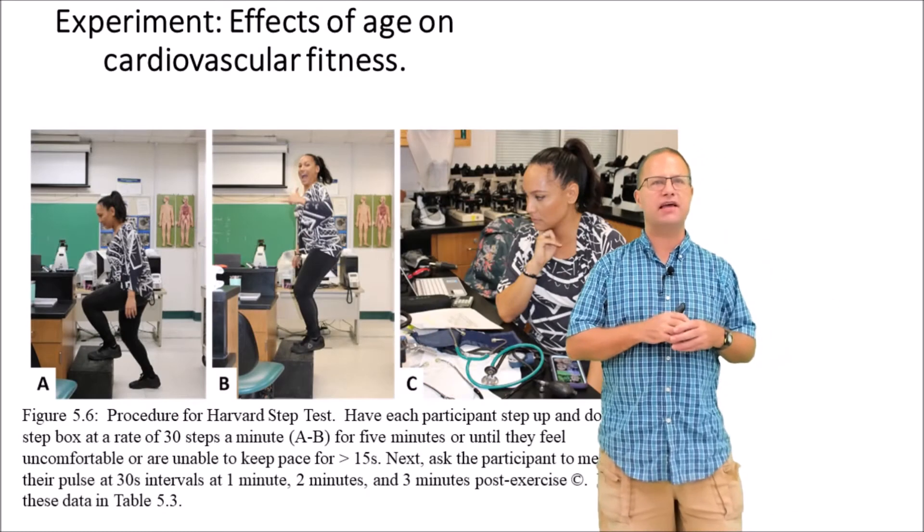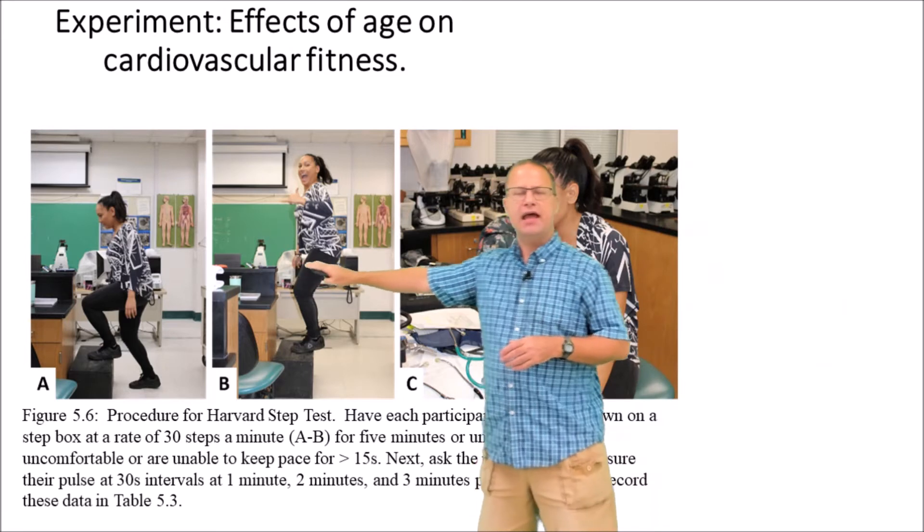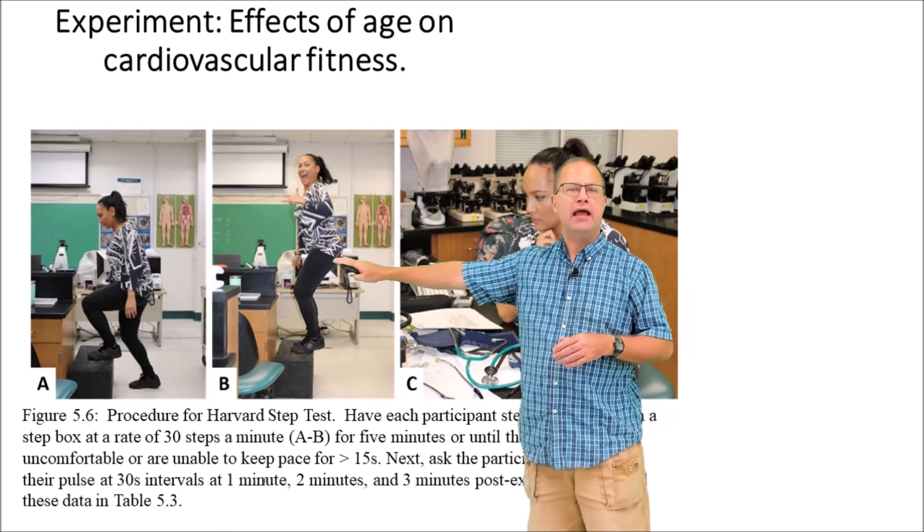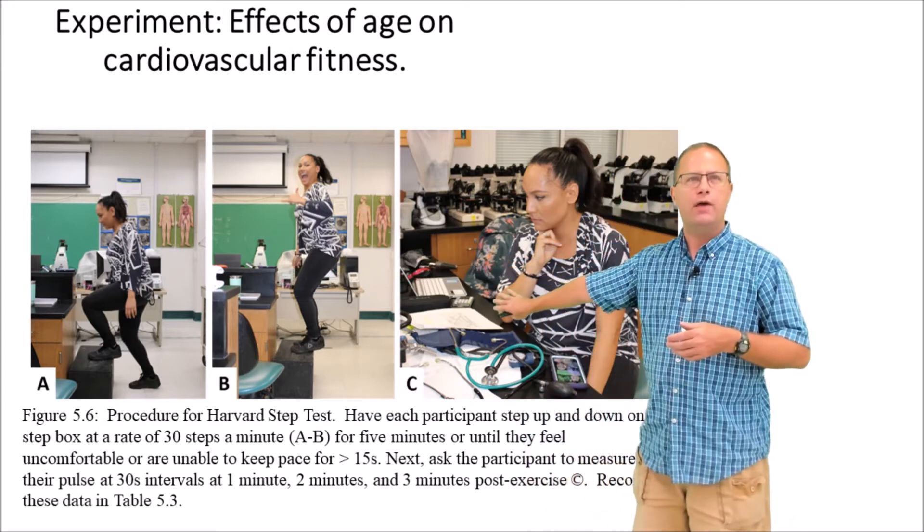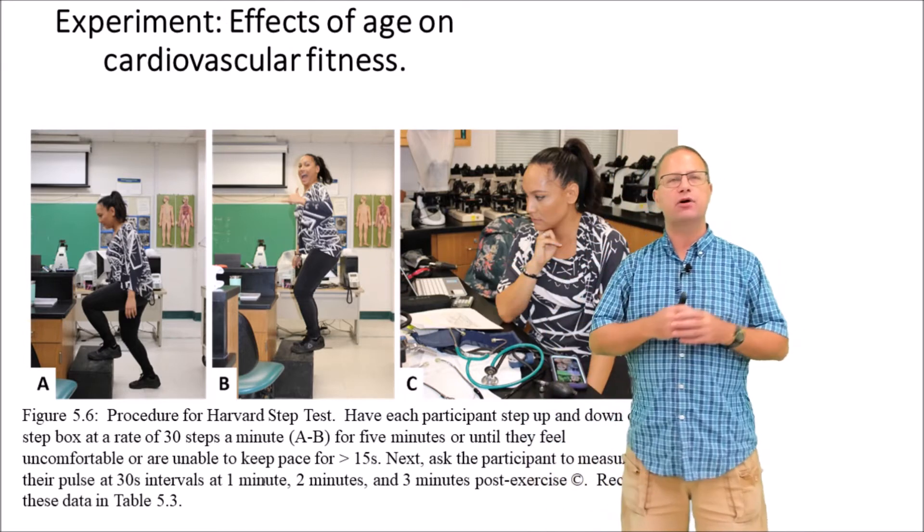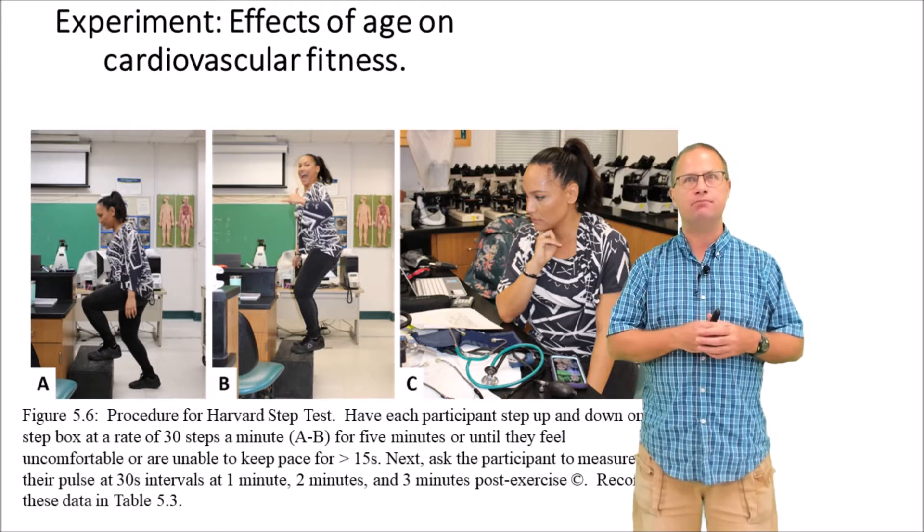So this is what it looks like when we're conducting it in the classroom. We have this person, and they are stepping up and down on the step box, and they're doing 30 cycles per minute. And then once they reach fatigue or five minutes, either one, we have them sit down, and we record their heart rate at minute one to one and a half, two to two and a half, etc.